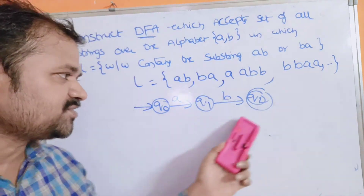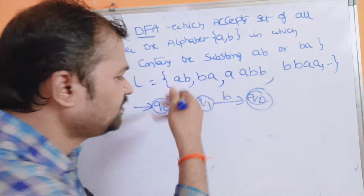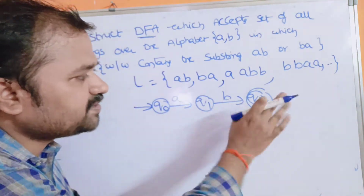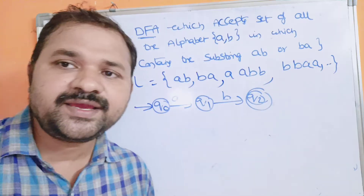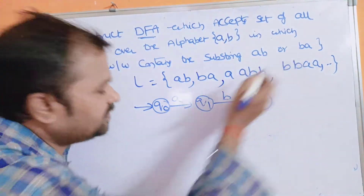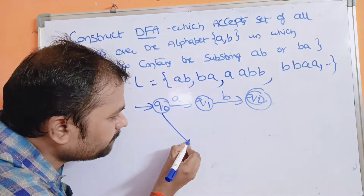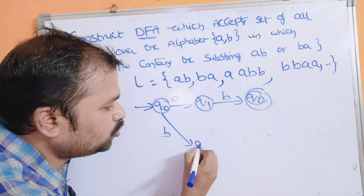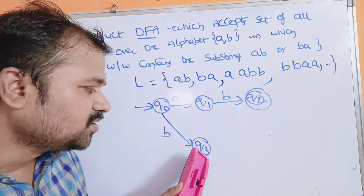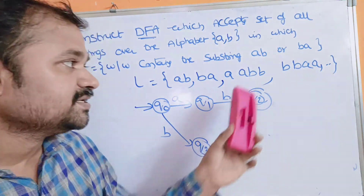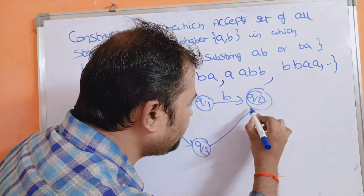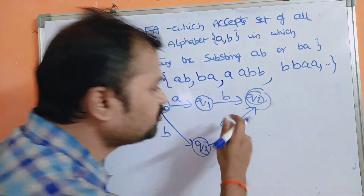This is not yet a complete DFA, because we still have to apply B on Q0, A on Q1, and both symbols on Q2. Since the substring may be either AB or BA, if we apply B on Q0 we go to a new state Q3. Then if we apply A on Q3, we go to state Q2.